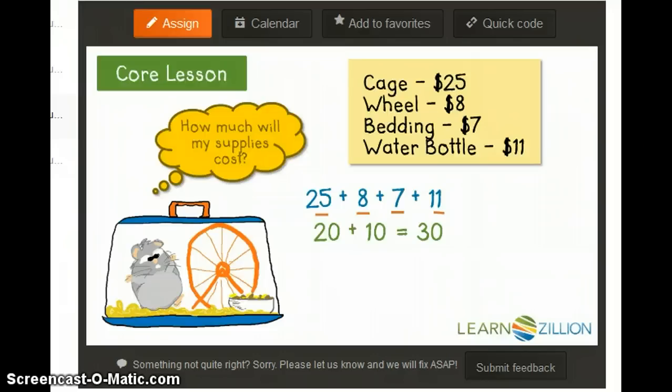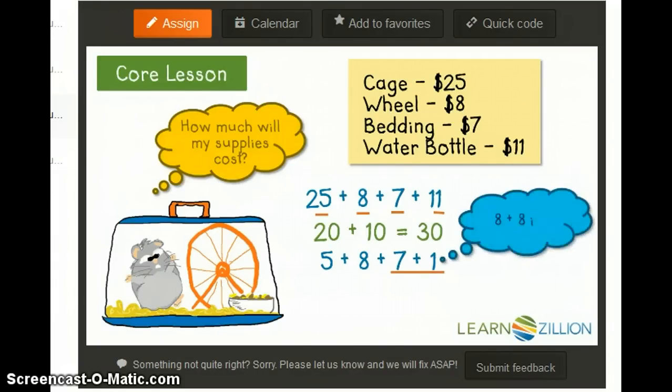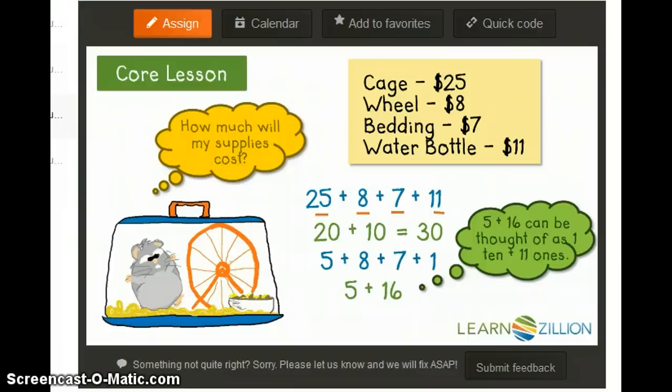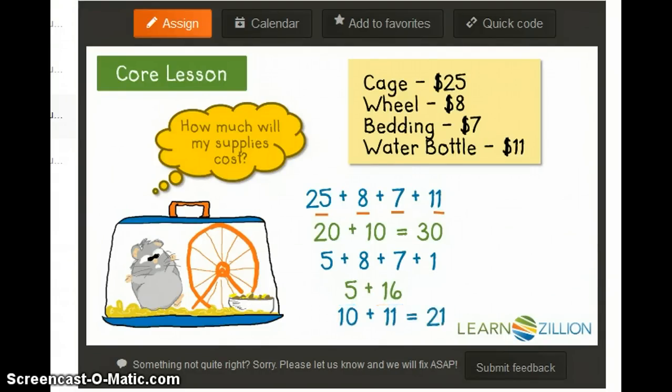I can now add together the ones: 5 plus 8 plus 7 plus 1. I can add together 7 plus 1 to get 8, and I know that 8 plus 8 is 16, so now I just need 5 more. I can think of 5 plus 16 as 1 ten and 11 ones, so I can add 10 plus 11 to get 21.